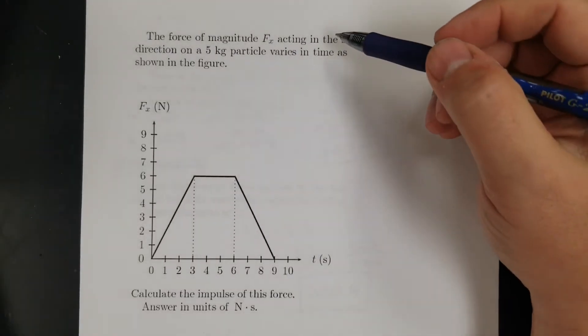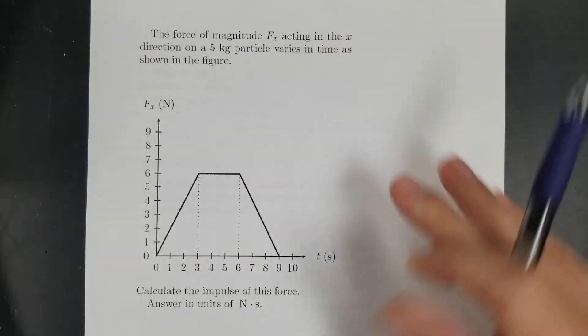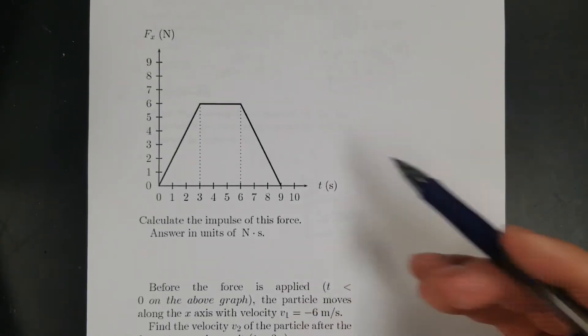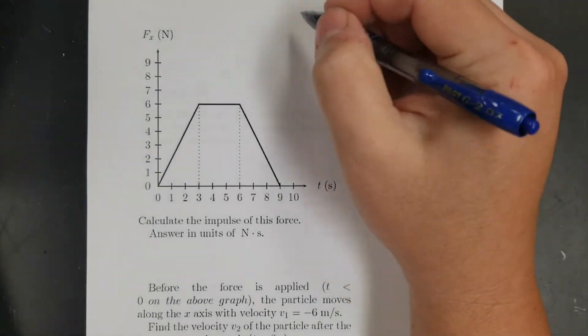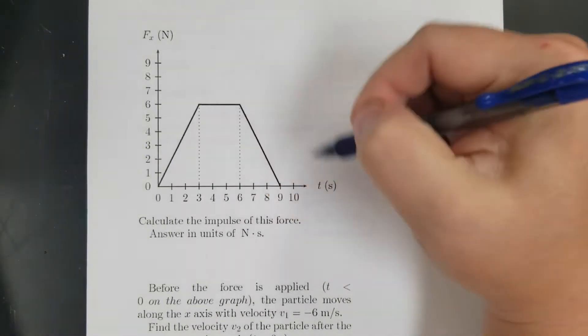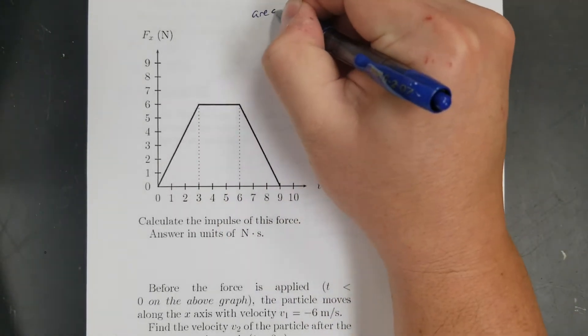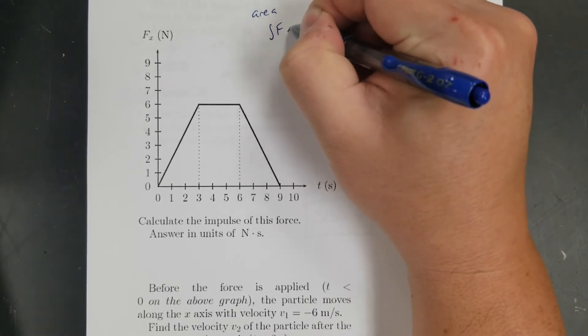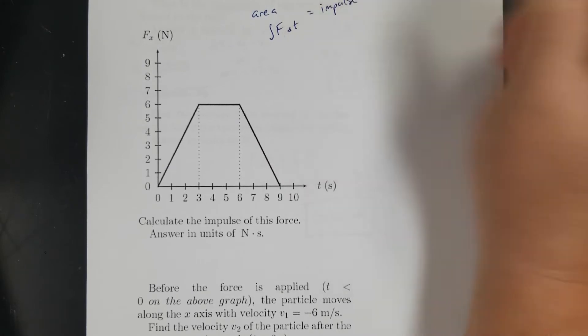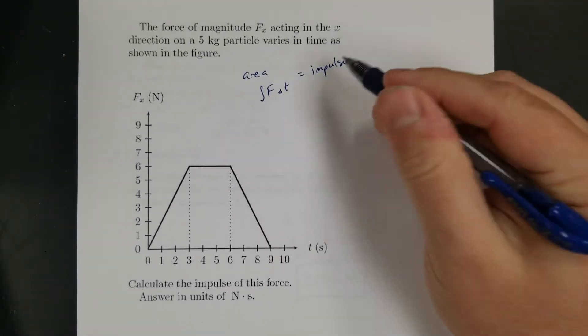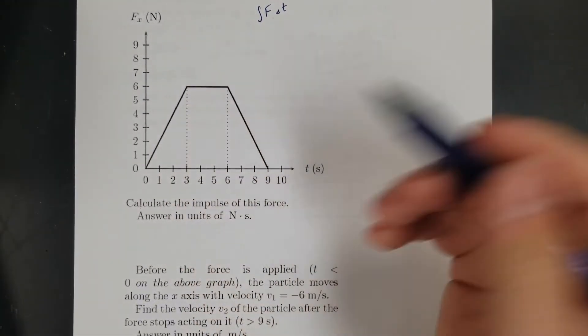All right, one more just for fun. Okay, the force of magnitude F sub x acting in the x-direction on a 5-kilogram particle varies in time. Oh, I got a graph. So immediately, force, time, right? So if I have a graph, then force times time, a force versus time graph is going to tell me impulse with this area underneath, right? The area, which is the same thing as the integral of F dt, is going to equal the impulse. All right, and so because this isn't a calculus-based class, I don't have to integrate, right? It's not a curve.